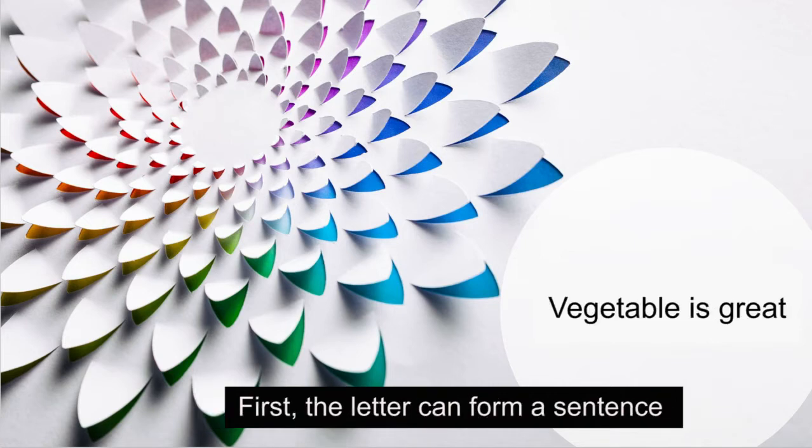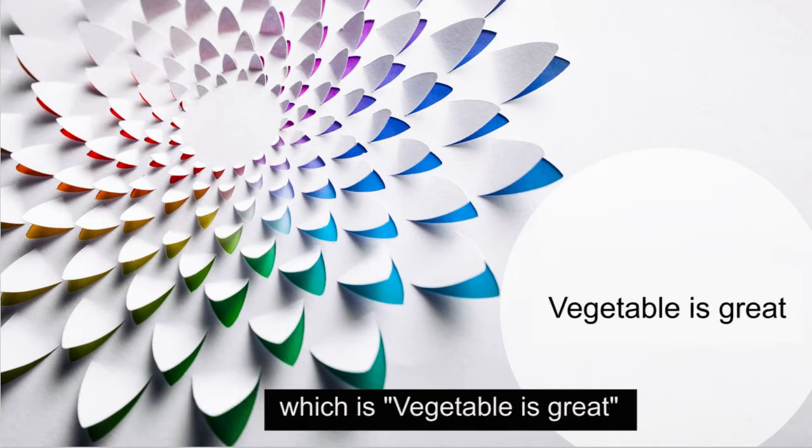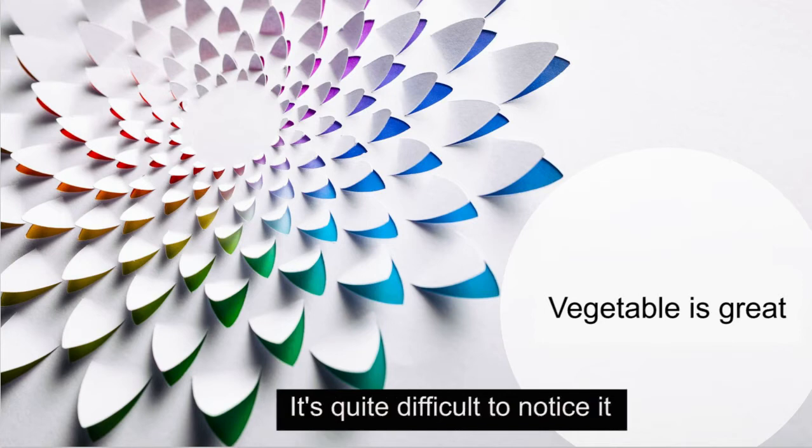First, the letters can form a sentence which is vegetable is great. It's quite difficult to notice it.